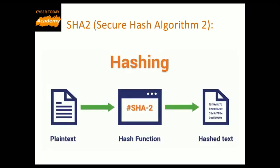SHA2, Secure Hash Algorithm 2, is a set of cryptographic hash functions designed by the United States National Security Agency (NSA) and first published in 2001. They are built using the Merkle–Damgård construction from a one-way compression function itself built using the Davies-Meyer structure from a specialized block cipher.